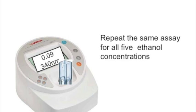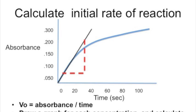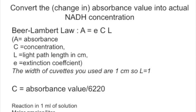Once you've done that, repeat the same assay of 800 µl plus 200 µl of ethanol for all five concentrations of ethanol that you've prepared. With the data you obtained, you can plot it on a time curve and estimate the initial rate of reaction. You will then convert that initial rate of reaction into actual concentration of NADH using the Beer-Lambert law. Refer to your protocol for more details on how to do this.